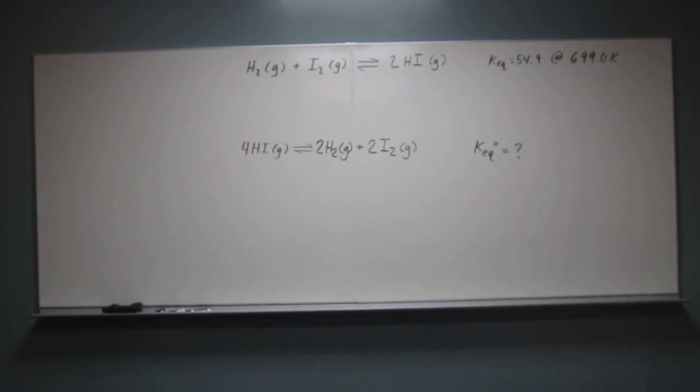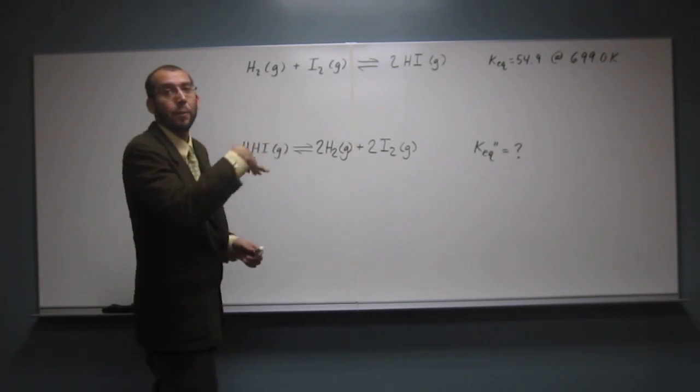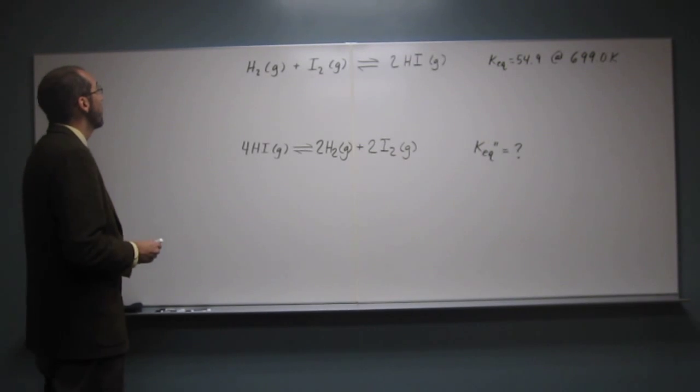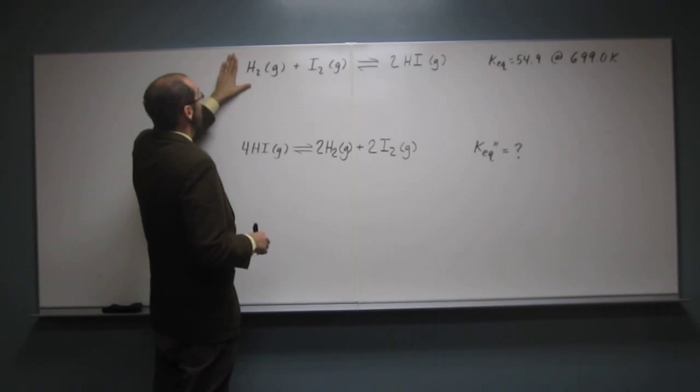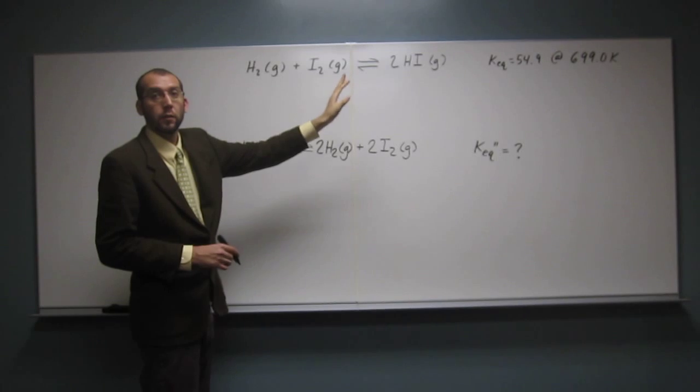So let's go ahead and attempt to figure out what the equilibrium constant would be one step at a time. I think that's the easiest way to do these things. So the first step is going to be, we're going to have to figure out what the equilibrium constant for the reaction just multiplying everything by 2 is.